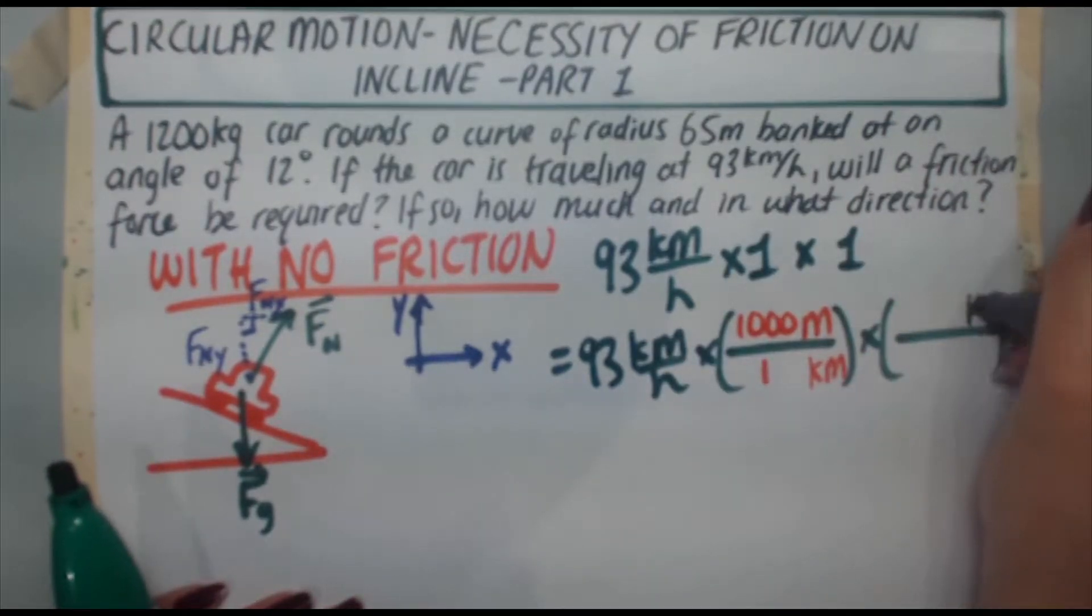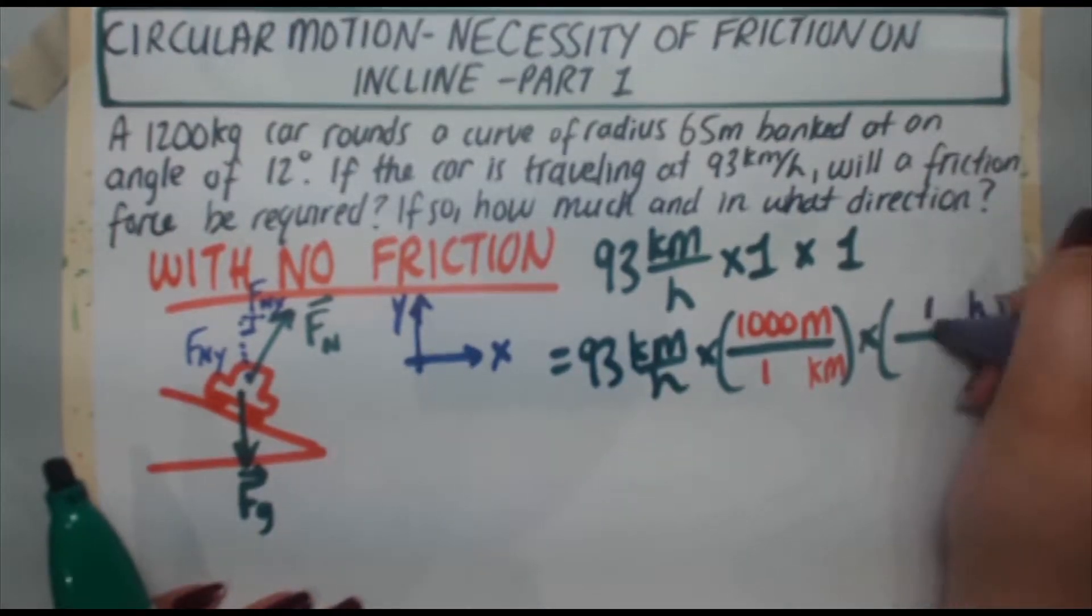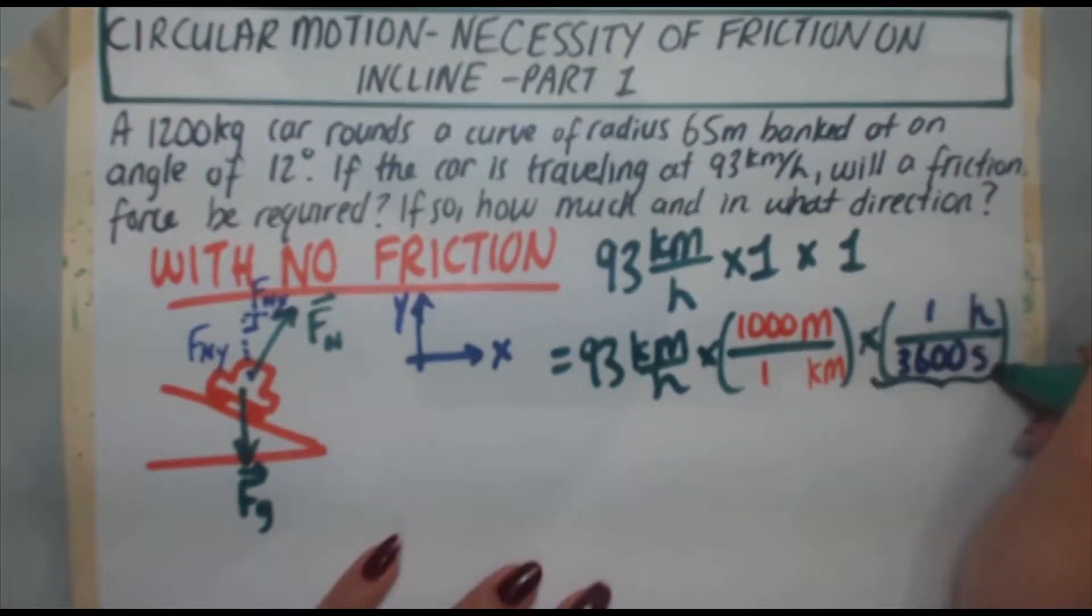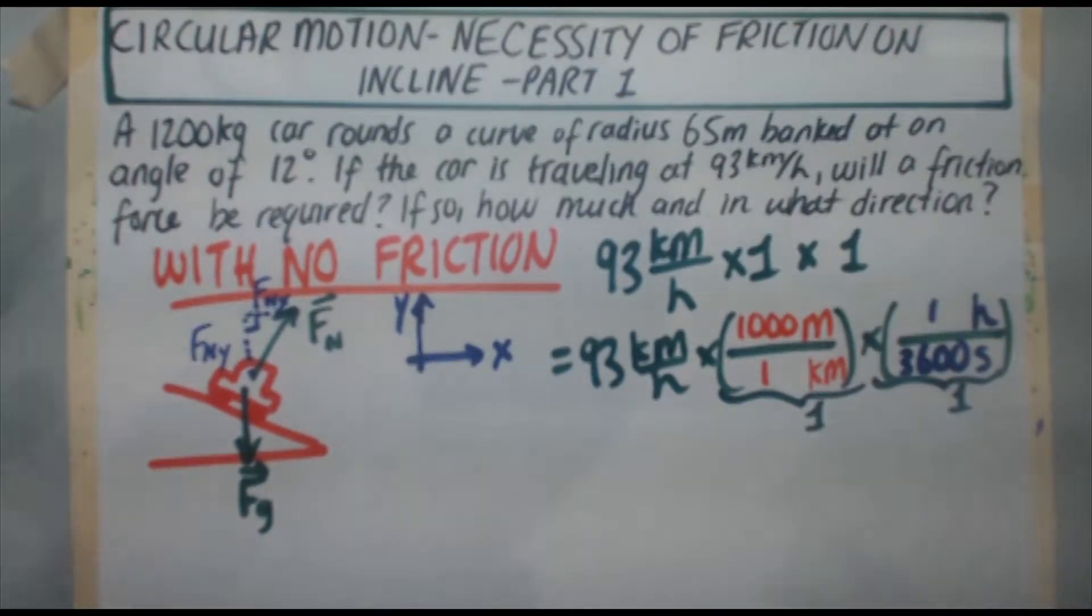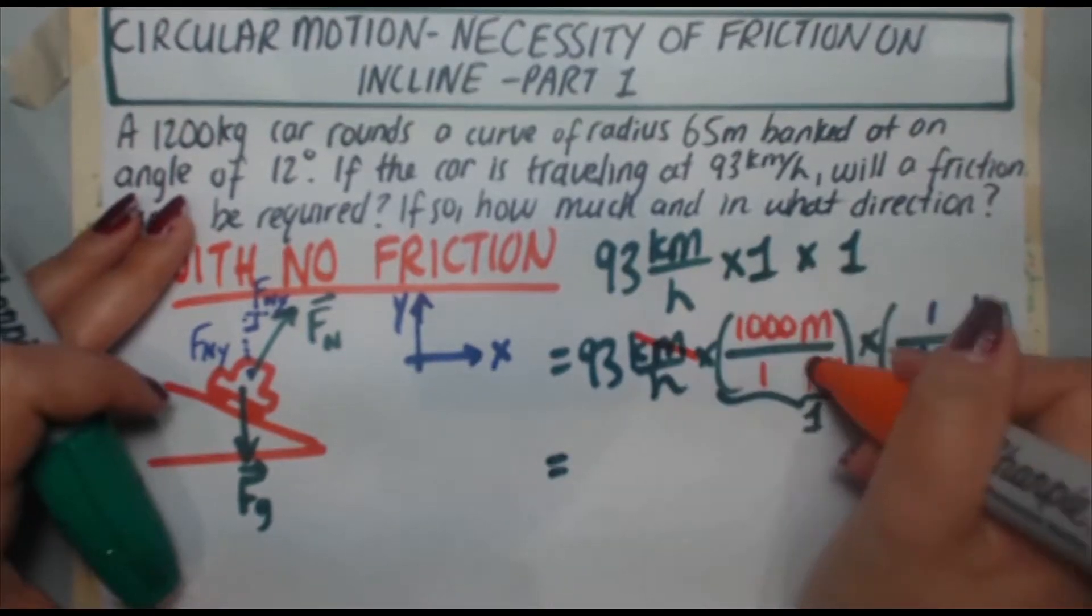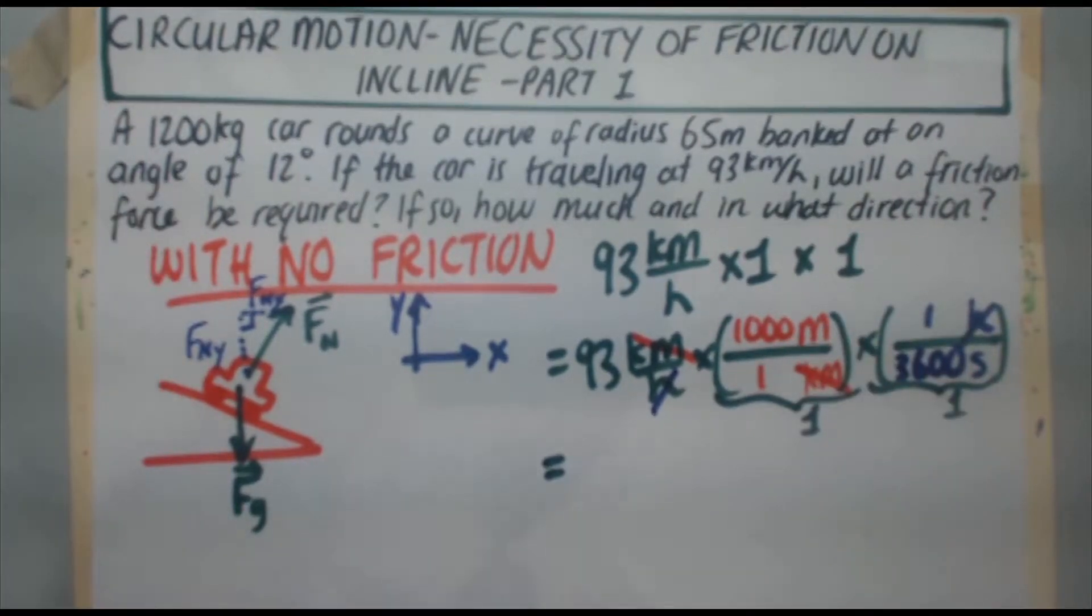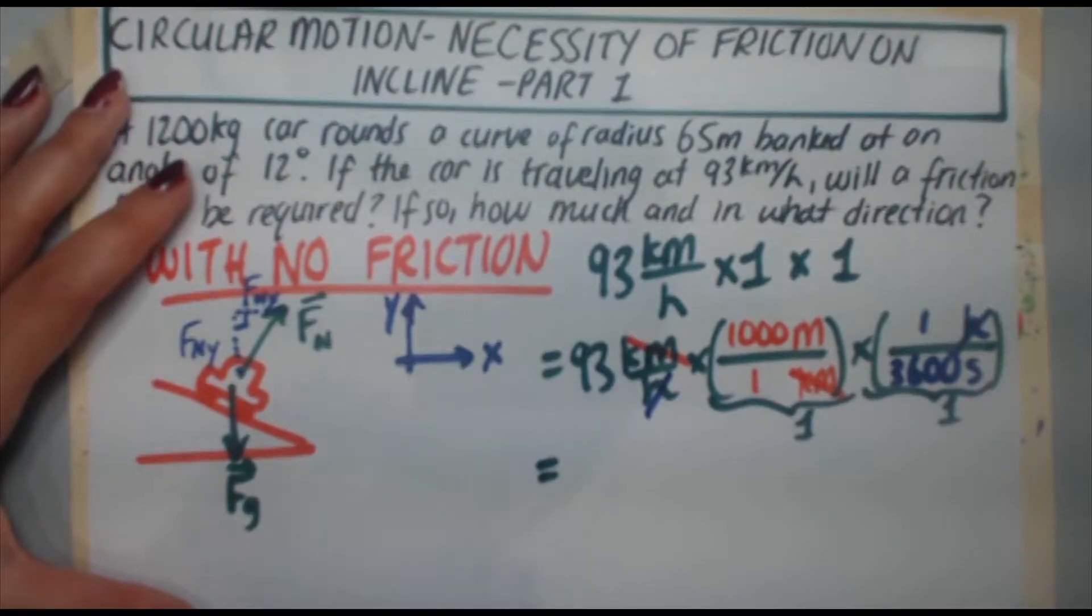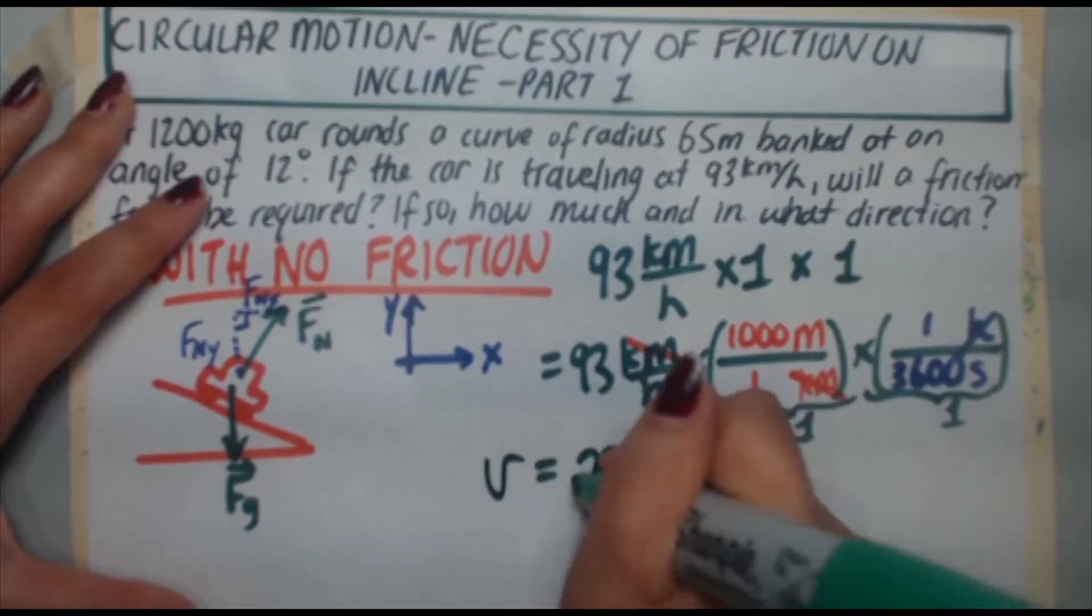For the hours, I need to get rid of it. So I put hours up here. I'm trying to get seconds. That goes down here. One hour is 3,600 seconds. So even though they look different, this is still one and this here is still one. So I haven't changed the value. It's still worth 93 kilometers per hour. The only difference is now the kilometers cancel and the hours cancel. So I'm left with meters per second. So you do 93 times a thousand divided by 3,600, which equals 25.8 meters per second. So there's your speed.